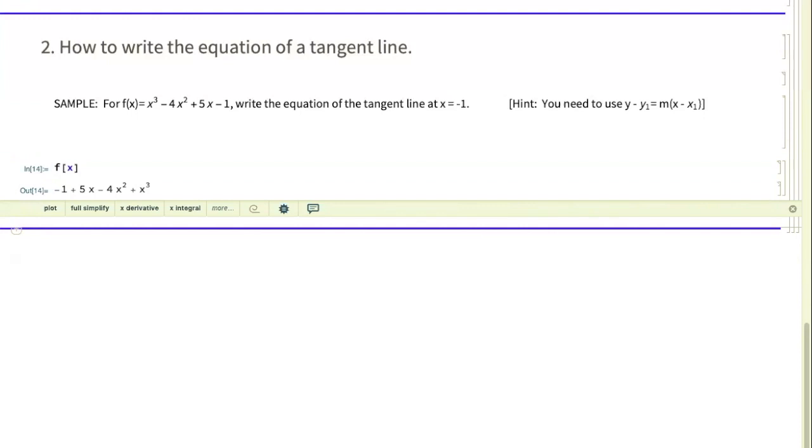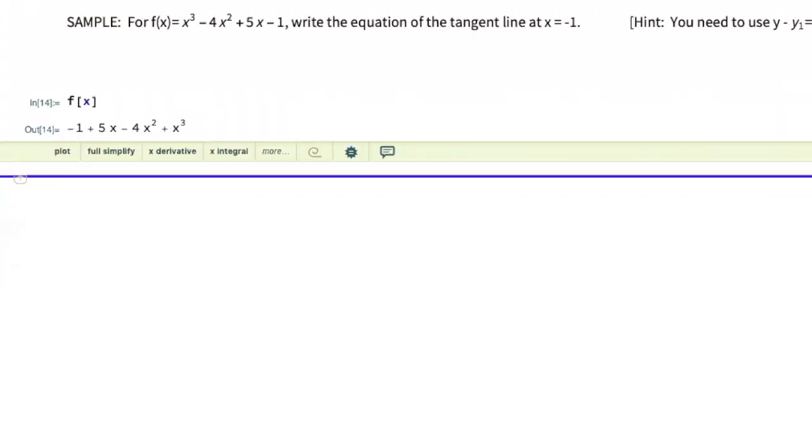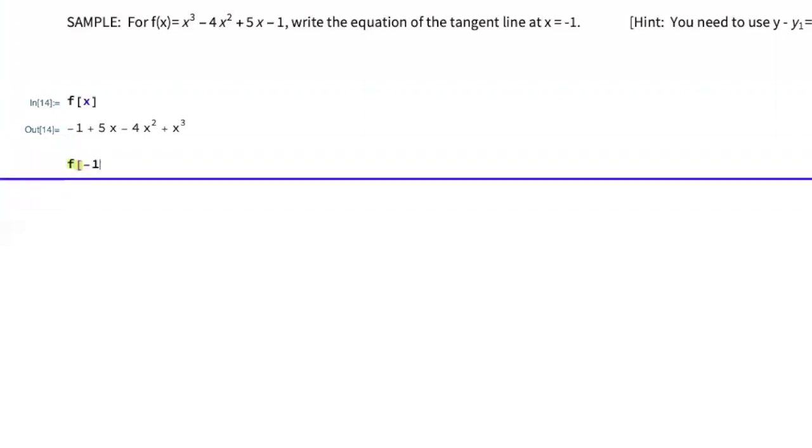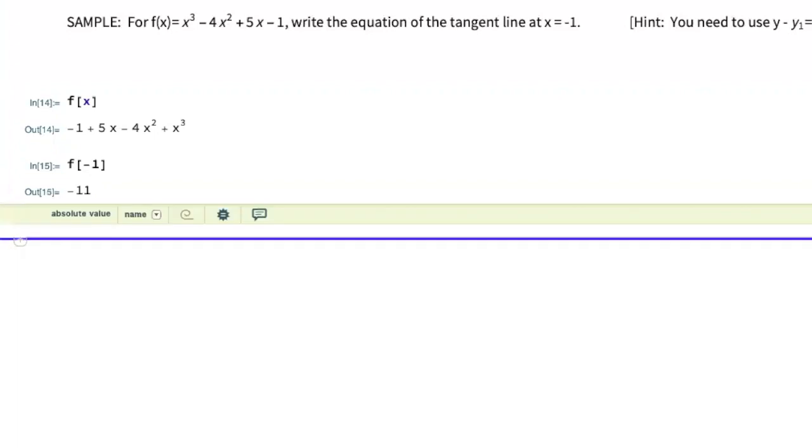And to use point slope formula, you need two things. You need the coordinates of a point, an x1, y1, and you need a slope. In order to get the point, I know I'm interested in x equals negative one. So I substitute that into the original function, get the output, and that'll be the y coordinate that I need. So my x1 is going to be negative one, and my y1 is going to be negative 11.